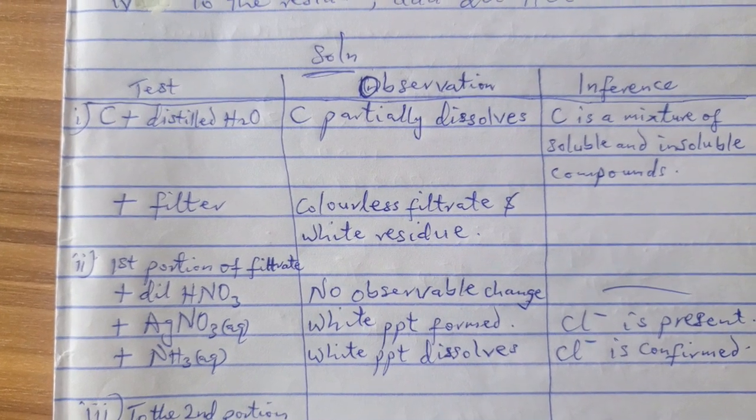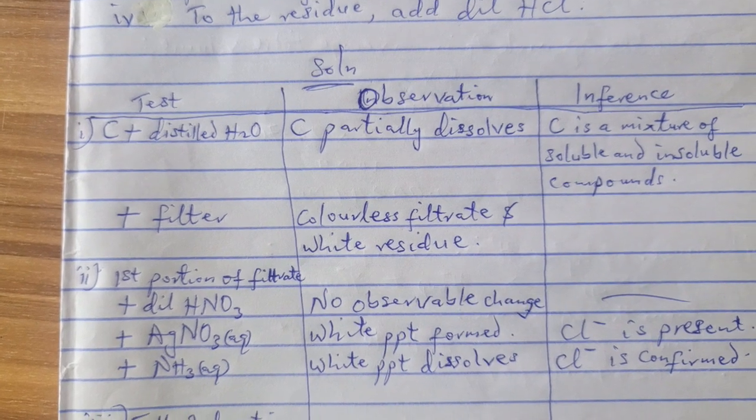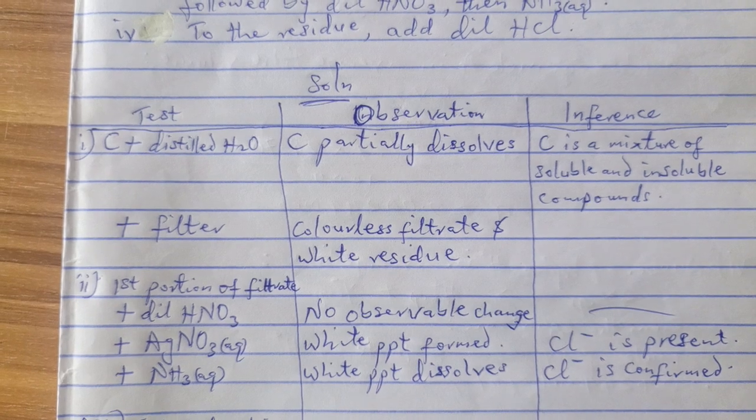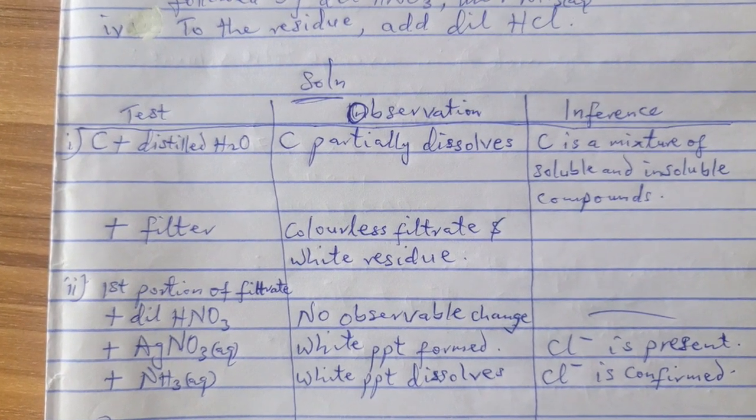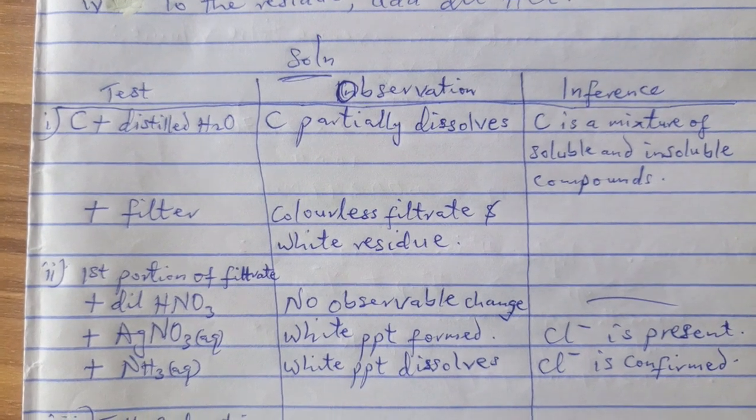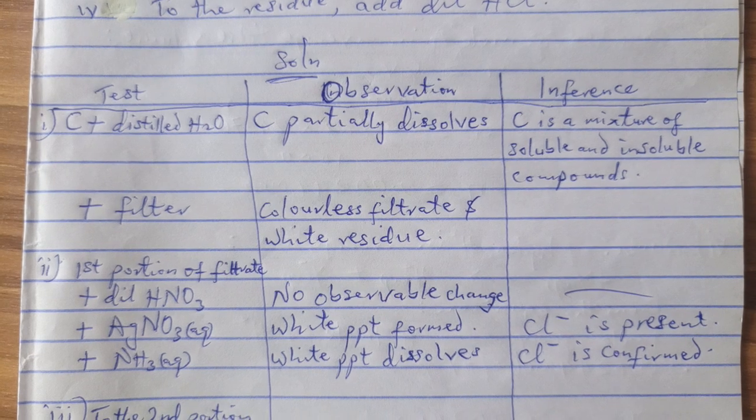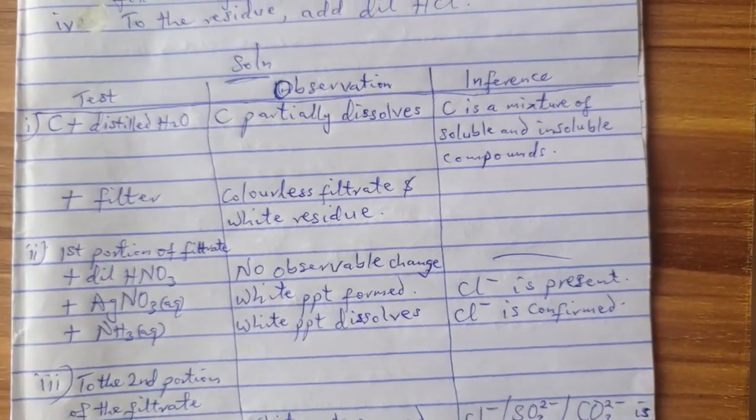Now they said you should do what? After you have finished checking, filter it. Because they know that it will not all dissolve. So when you filter it, check the color of the filtrate and that of the residue. Report on that observation as you have seen it here: colorless filtrate and white residue.